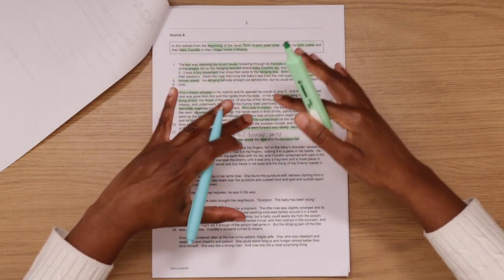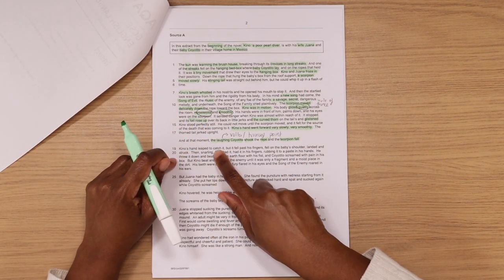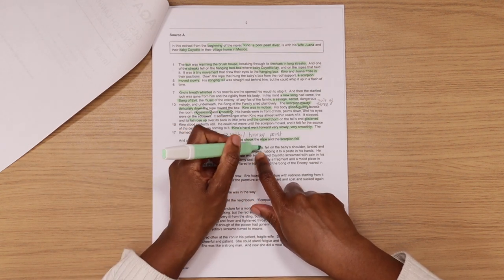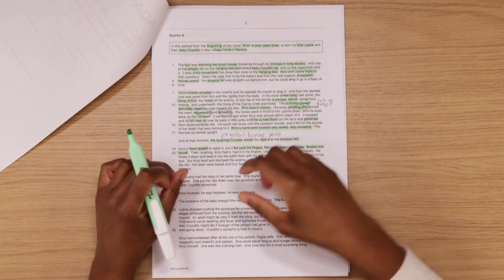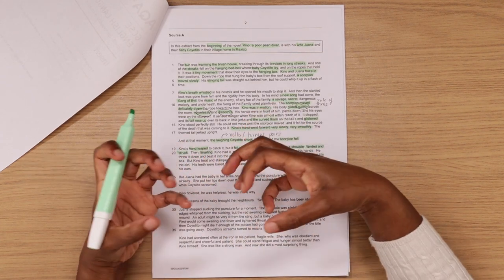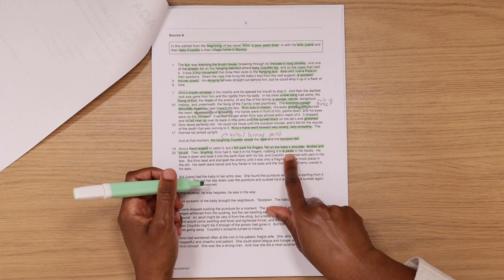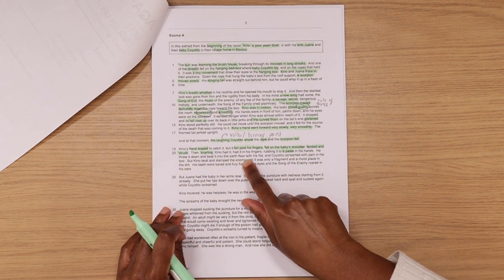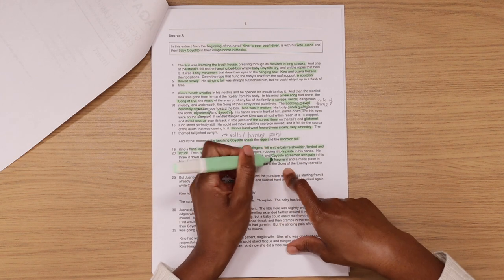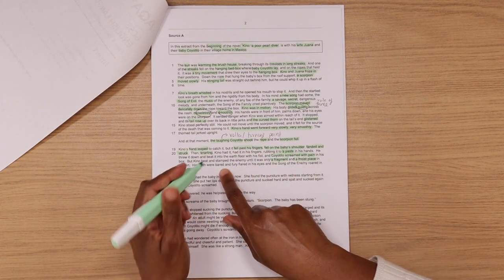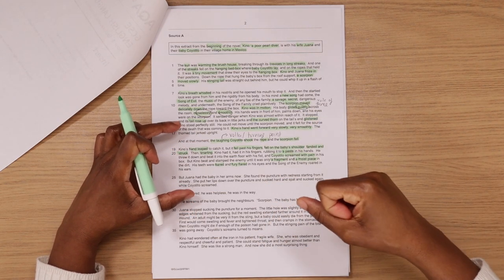Kino's hand leaped to catch it, but it fell past his fingers, fell on the baby's shoulders and landed and struck. Oh no. So now here we're supposed to be like, oh, can't believe this is what's happened. Then snarling. Now there's really, really noisy onomatopoeia. Contrast to whistle, which was silent. Then snarling, Kino had it, had it in his fingers, rubbing it into a paste in his hands. Metaphor to talk about how he's crushing the scorpion. He threw it down and beat it into the earth floor with his fist and Coyotito screamed with pain. So the baby is in lots of pain in his box. But Kino beat and stamped the enemy until it was only a fragment, a moist place in the dirt. His teeth were bared and fury flared in his eyes and the song of enemy roared in his ears. So Kino is just literally pounding at this and attacking the scorpion with all his might.